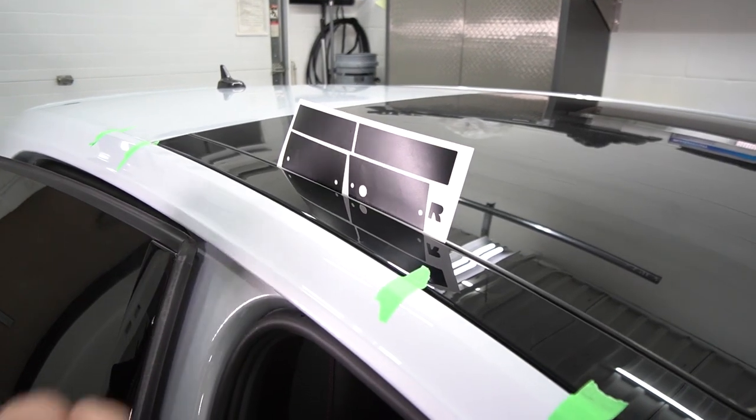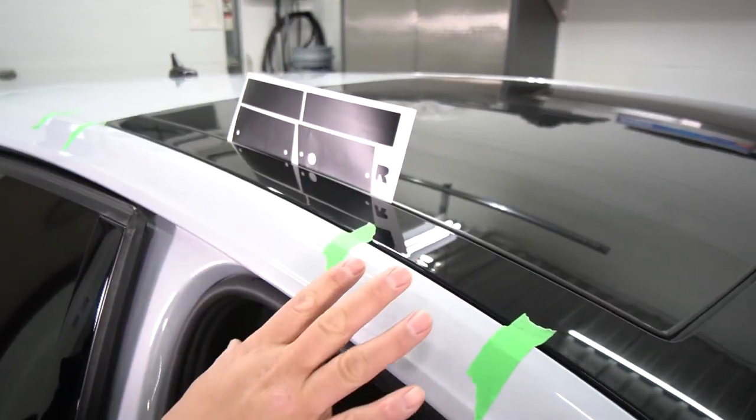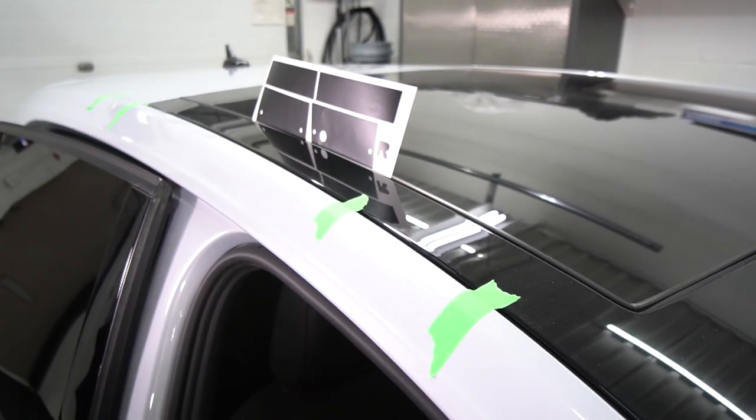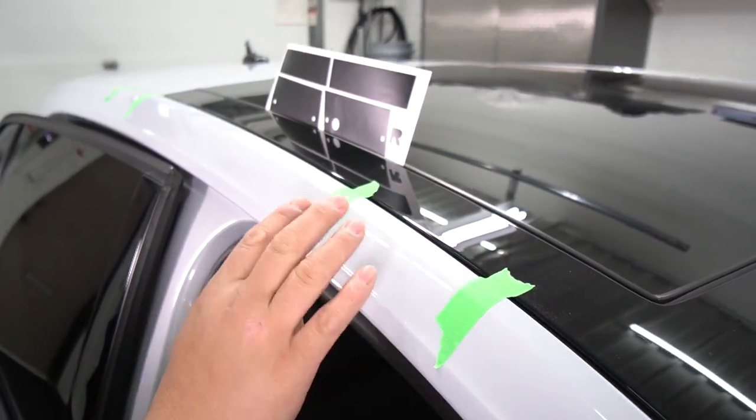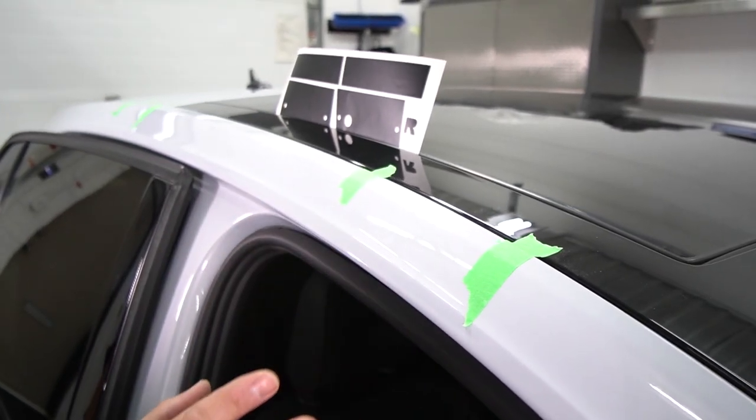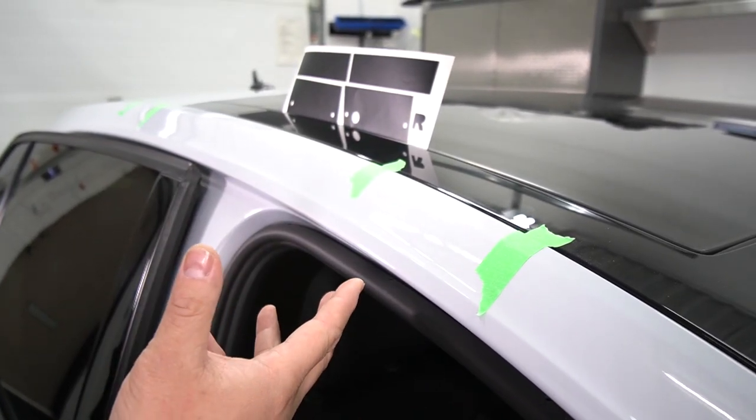Once you have the roof rails removed and you've prepped the surface by cleaning it using alcohol and microfiber cloth, wiping it down and making sure it's dry and free of debris and dirt, you can go ahead and do the install of the kit.